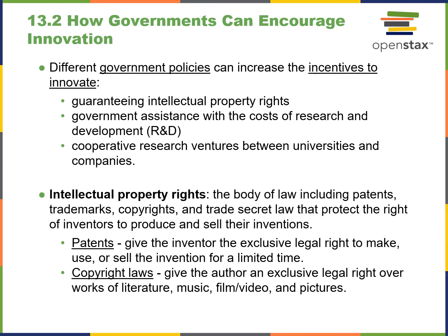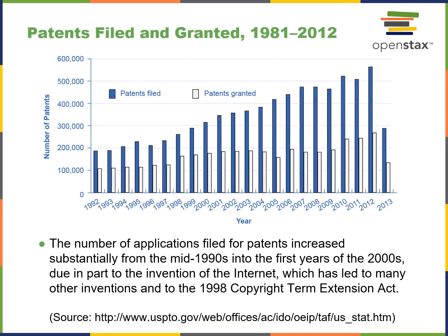How can governments encourage innovation? Some examples include guaranteeing intellectual property rights, giving grants for research, and cooperative research ventures between universities and companies. Intellectual property rights can be in the form of patents or copyright laws — all terms you may want to know for the test. Looking at patents filed and granted between 1981 and 2012, you can see that filings are far greater than the number of patents actually granted.